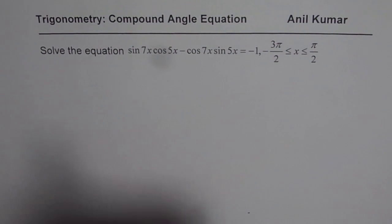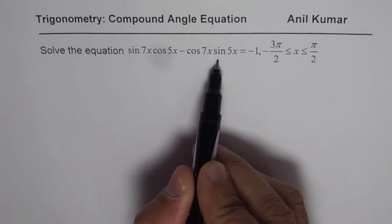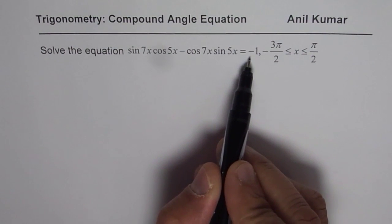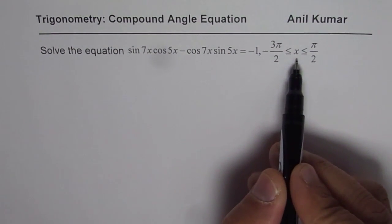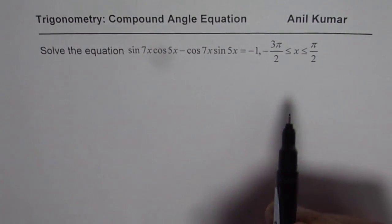The question here is, solve the equation sin 7x cos 5x minus cos 7x sin 5x equals to minus 1 where x is between minus 3 pi by 2 and pi by 2.